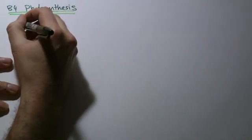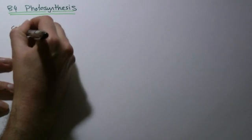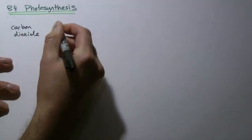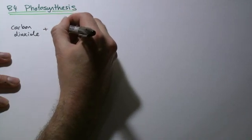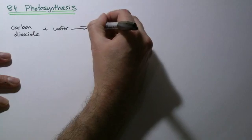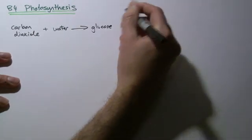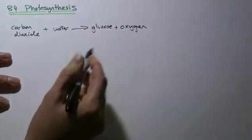We'll start off with the formula, we'll do the simple word version first. Carbon dioxide, which seems to be everyone's favorite chemical actually. Whenever people get a question, ask the name of a chemical and they're not sure what to put, they always end up writing carbon dioxide. Carbon dioxide plus water makes glucose plus, or it's converted, sorry, to glucose and oxygen.